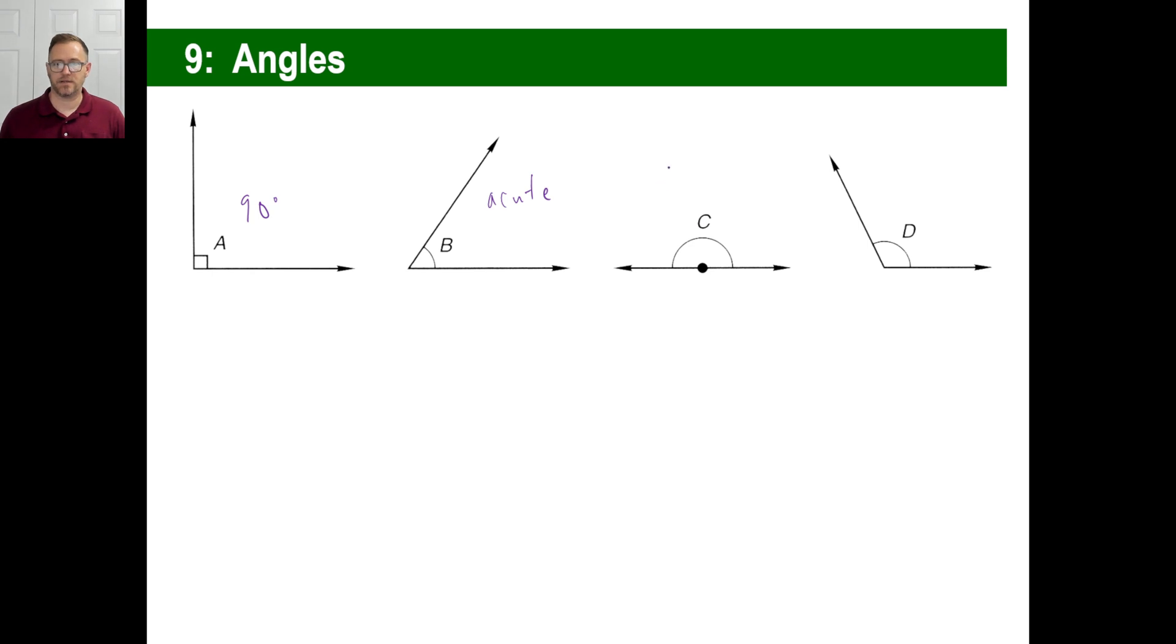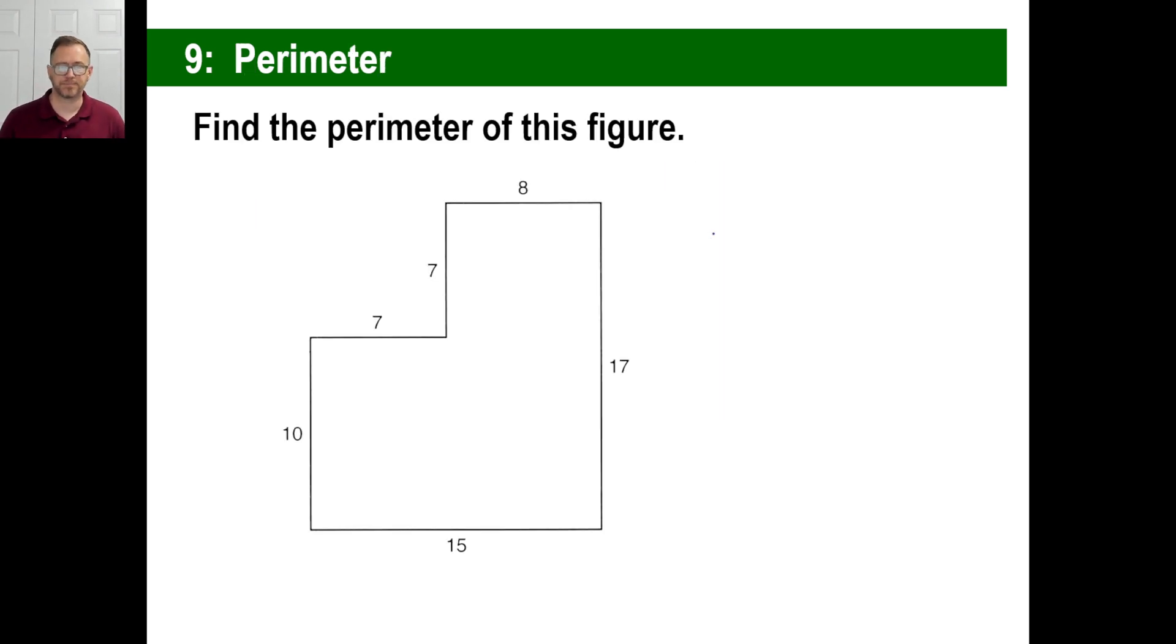Angle C, sometimes it's called a straight angle, because it's basically a line, really. And since it is the value, or the measurement of two right angles, it is 180 degrees, and an acute is less than 90 degrees. This angle D is called an obtuse angle, because it is greater than 90 degrees, but not quite a straight angle, all right?